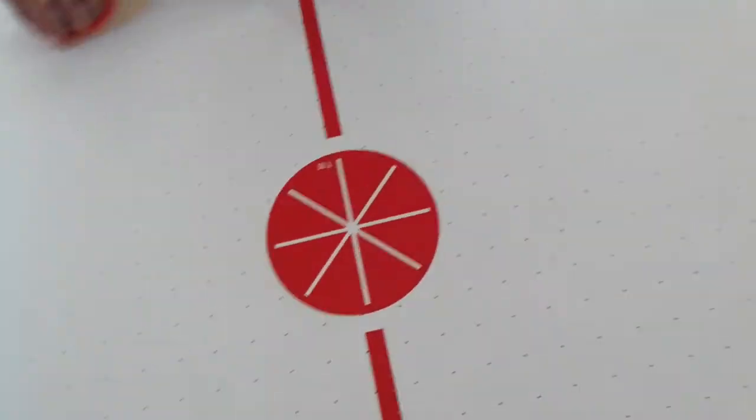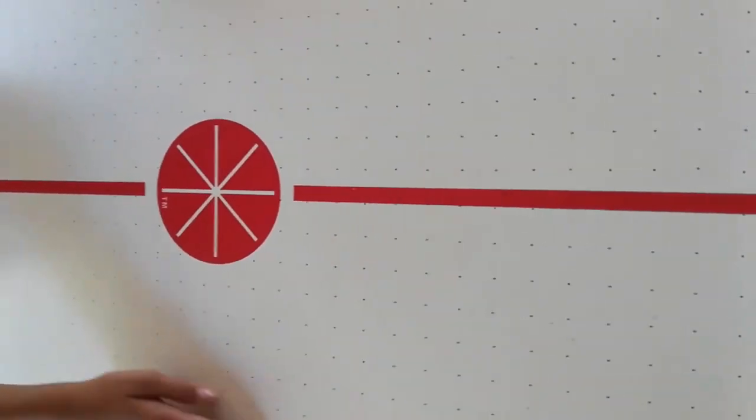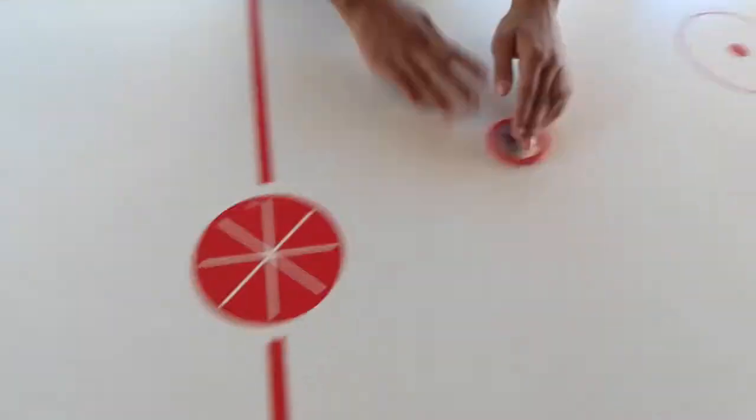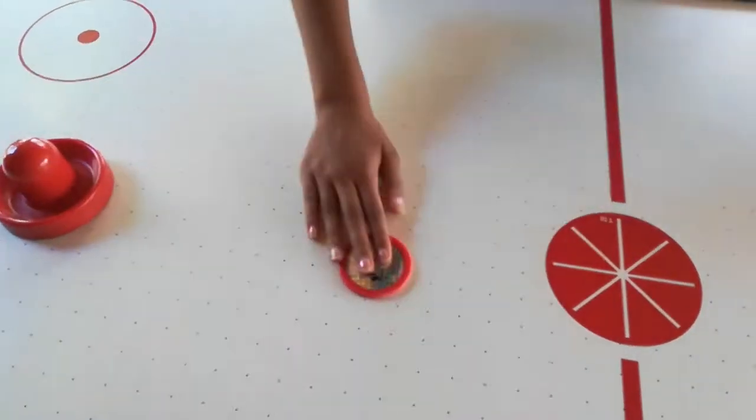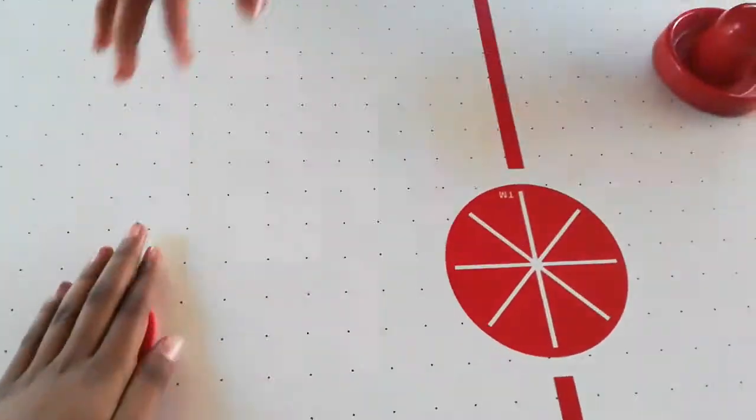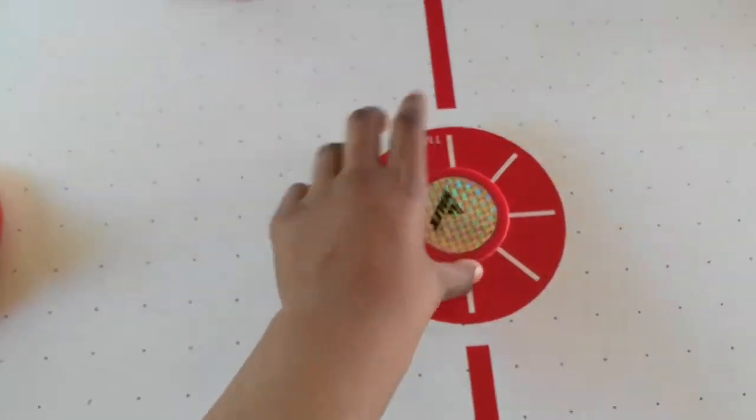Now we're going to explain the center line. So the center line here is to divide the area of player one, player two. If the puck's on this side, then player two could hit. But if it's on this side, player two can't hit it, can't cross the line with your striker. And if it's in the middle, you can restart that round of the match.